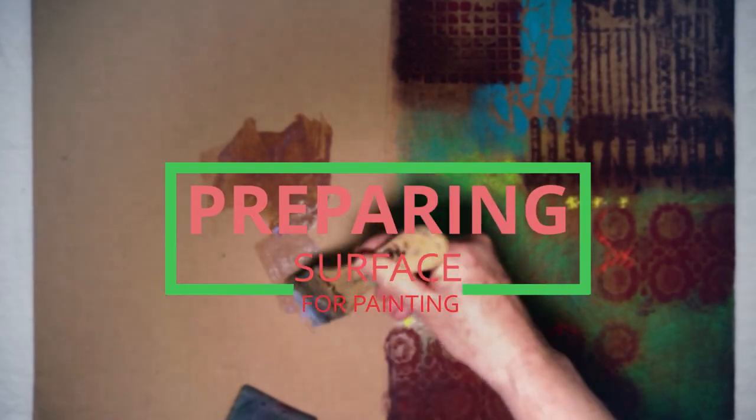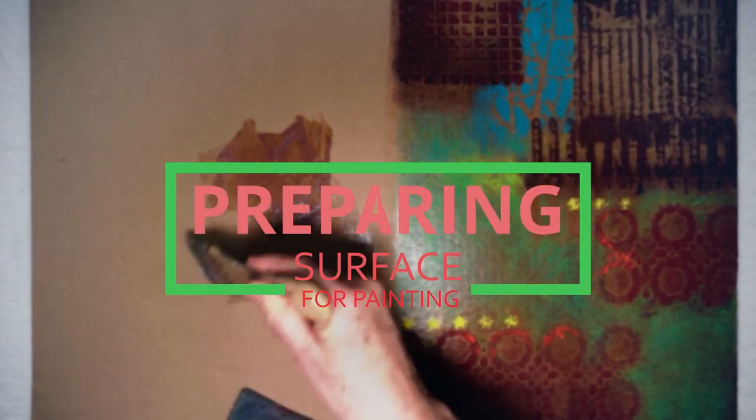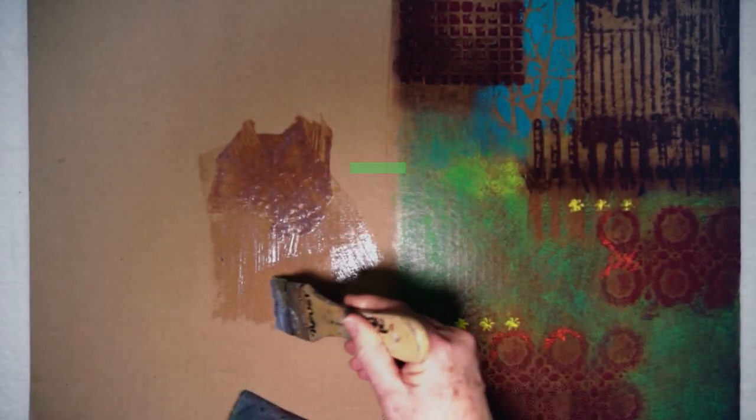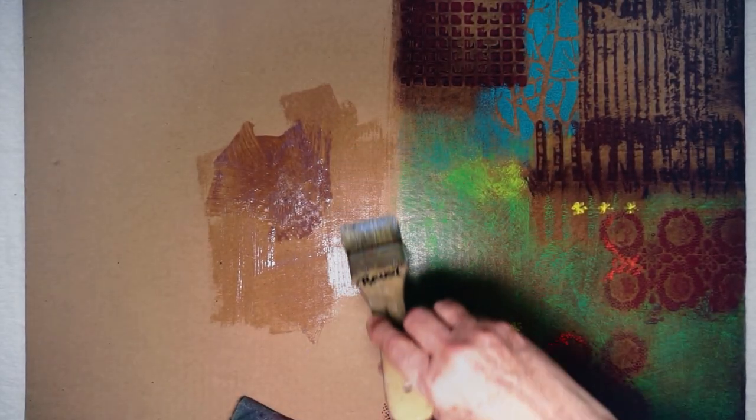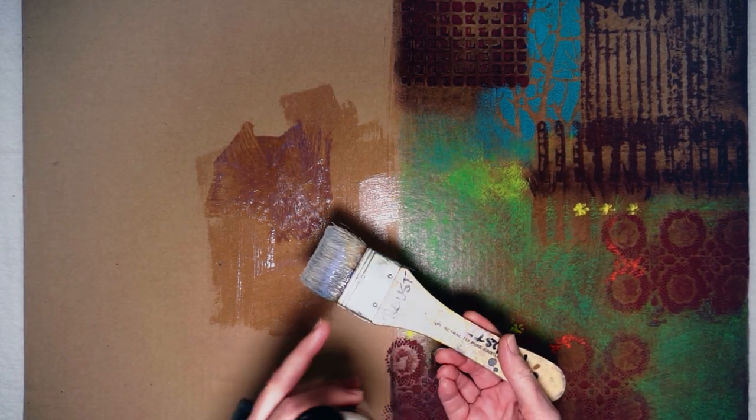When you apply binder, it's best to use a cheap wide bristle brush because it doesn't matter how well you wash your good brushes out, any mediums will leave a residue on your brush. Binder medium as a sealer comes into its own when you want to paint on a surface other than canvas.